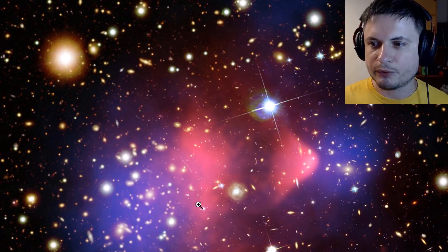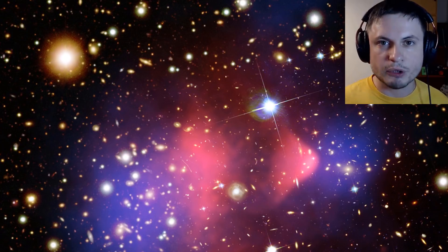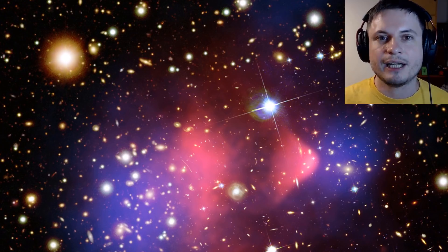Two galactic clusters colliding. The blue matter doesn't interact with anything so it passes directly through. The red, which is essentially just regular matter, does interact and so it creates an image that you see right here.